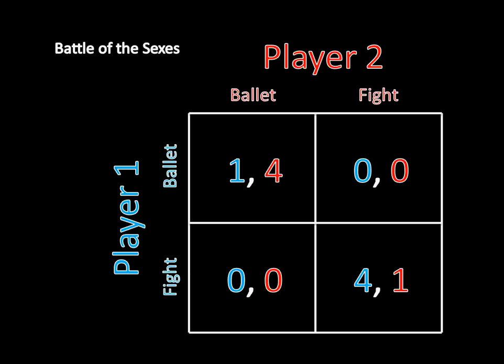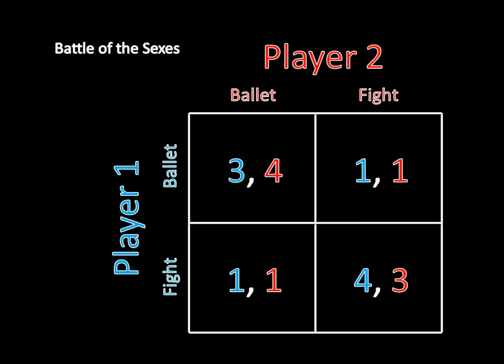I can make another minor change to this game — move the ones to threes — and that's not going to change the pure strategy Nash equilibria, but it will change the calculation for the mixed strategy Nash equilibria. So even if you'd solved the second game, that doesn't get you anywhere when you try to solve the third game. And again, I can make another slight modification, this time changing the zeros to ones, and you're in the same situation as before. Even if you've solved the first three versions of this game, you still have to solve that mixed strategy Nash equilibrium again in this fourth game.